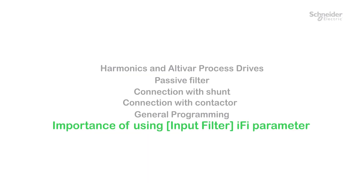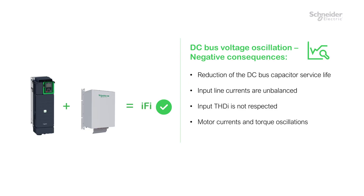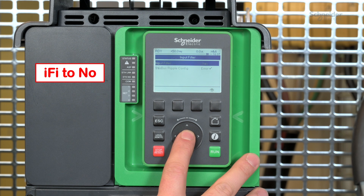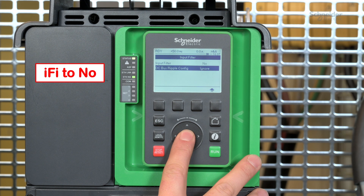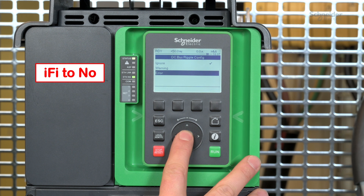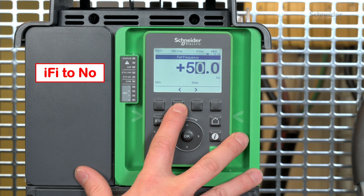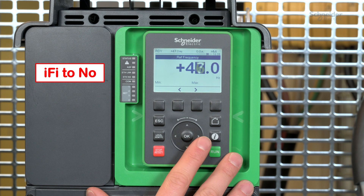Importance of using the Input Filter IFI parameter. If the drive is not properly set with a passive filter, it may encounter DC bus oscillation at some speed or load ranges. In normal conditions, the DC bus ripple is under 30 volts whatever the load. Now we will show the impact of setting IFI to No with a passive filter. We set Input Filter to No. Be careful: if you change Input Filter from Yes to No, DC bus ripple config is set by default to Ignore. You must change it manually to Error. To better illustrate these oscillations, we will show a condition at 46 Hz at nominal load.